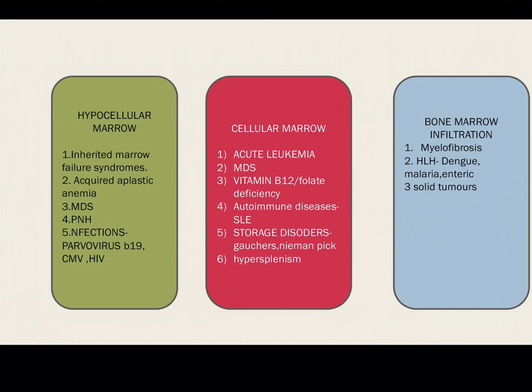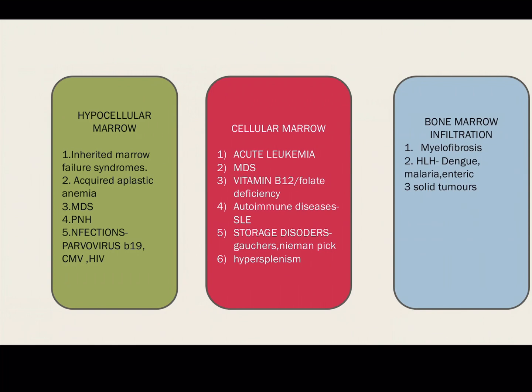A cellular bone marrow is when the bone marrow is forming cells but they are abnormal, as in acute leukemia, myelodysplastic syndrome, vitamin B12 deficiency, autoimmune disease like SLE, and storage disorders. Bone marrow infiltration is when normal functioning of the bone marrow is hampered due to infiltration from outside — it could be due to infection or abnormal cells, as in HLH.